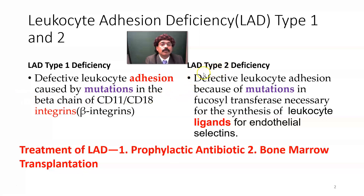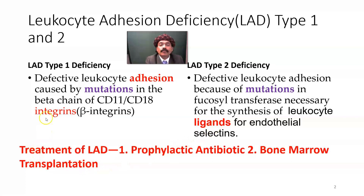Leukocyte adhesion deficiency type 2 involves defective leukocyte adhesion because of mutations in the fucosyltransferase necessary for the synthesis of leukocyte ligands for endothelial selectin. The leukocyte is again unable to adhere to the endothelium. These are the two types of leukocyte adhesion deficiency.